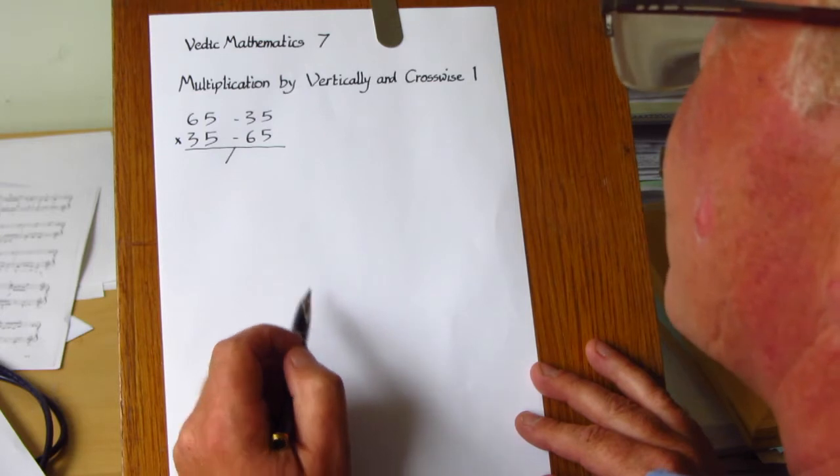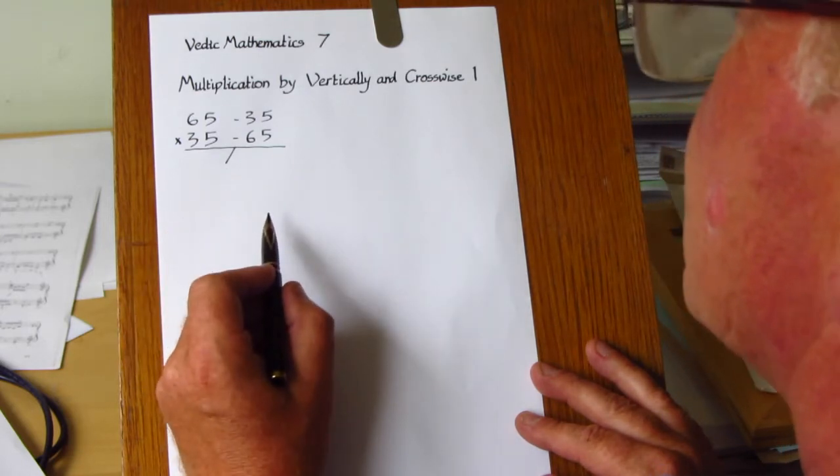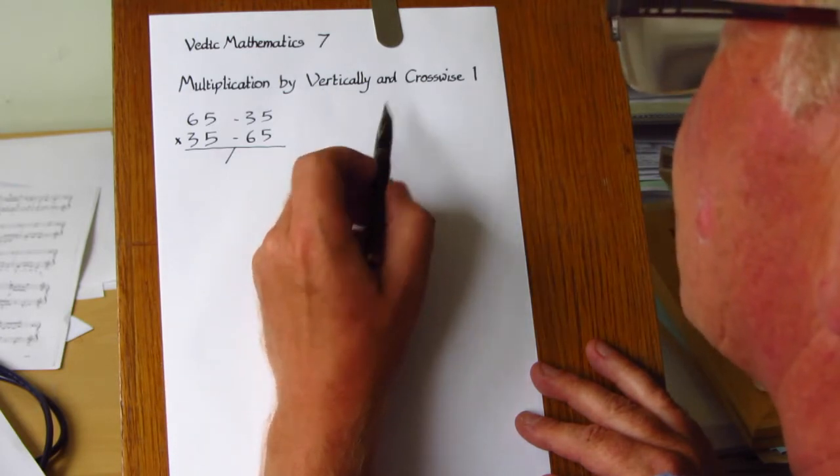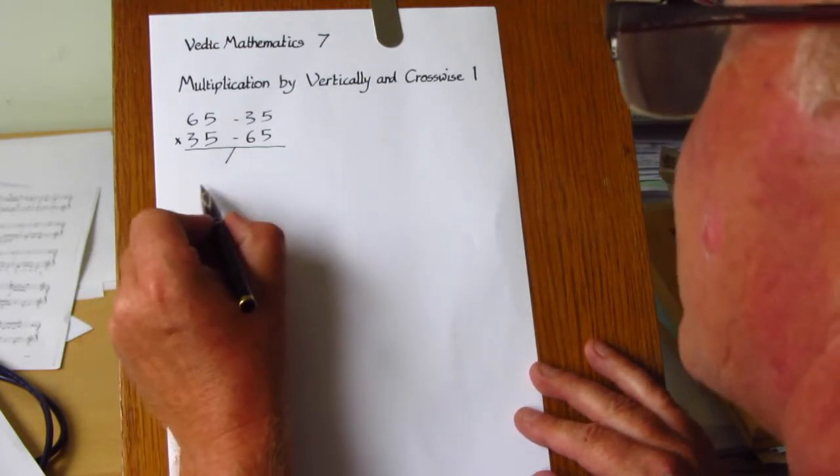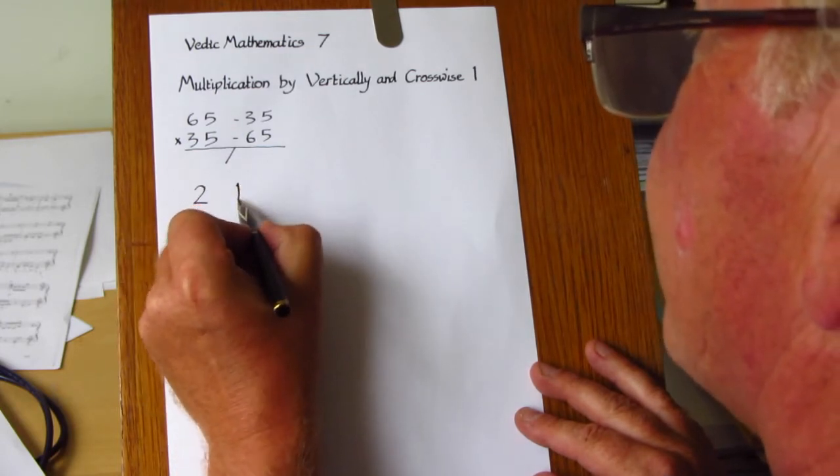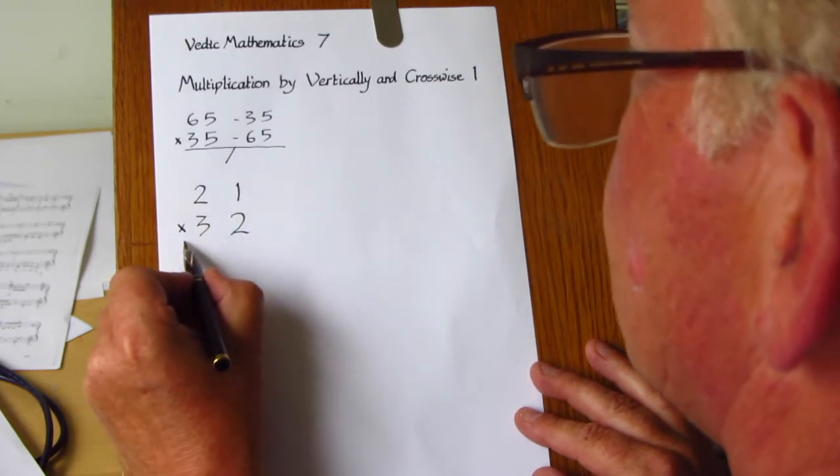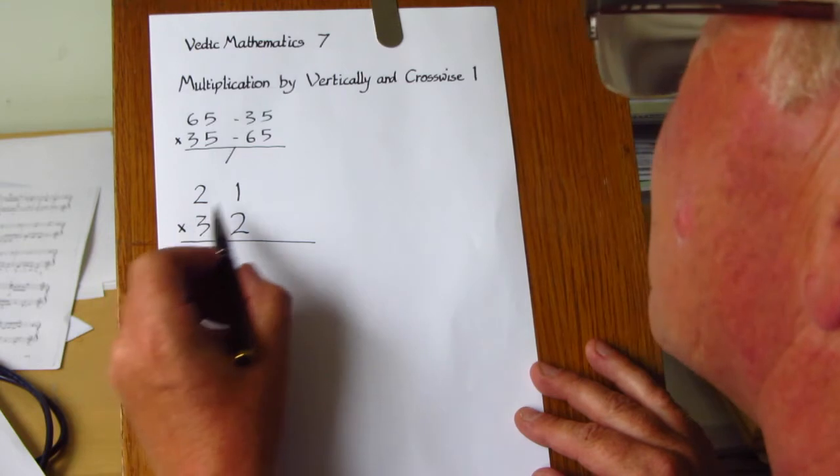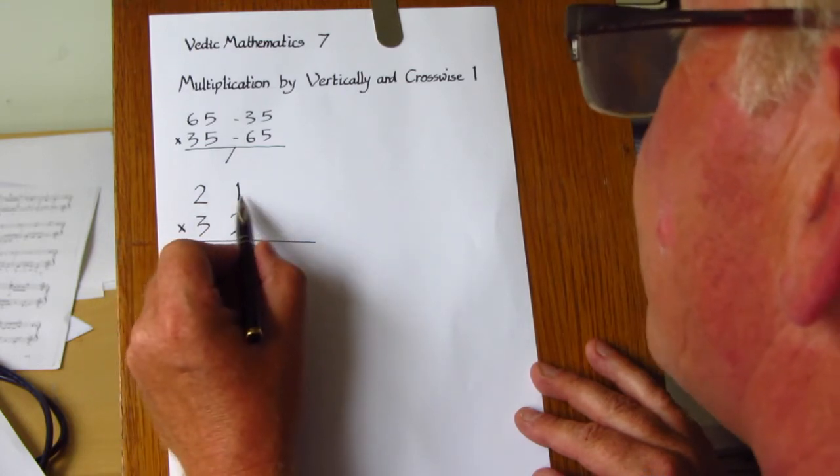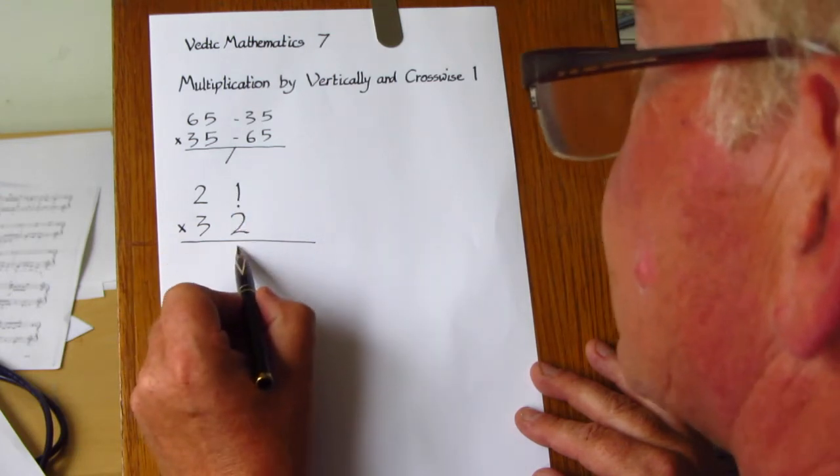Fortunately there is a general method for multiplying numbers of any size. You can do it in one line, it is very fast and easy, and it is by the rule vertically and crosswise. So this is how it works. Let's take a simple example of 21 multiplied by 32. And here we multiply vertically the units digits together, 1 times 2 is 2.